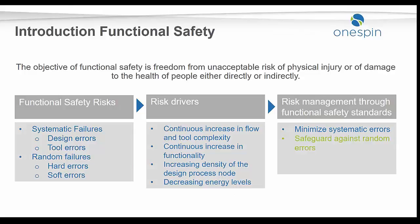The safety risks really come from either systematic failures or random failures. Systematic failures are basically the ones we introduce in the design cycle or into a design. The nature of systematic failures is that they are present in all devices. Then we have random failures, which occur in single devices like hard or soft errors — for example, a latch inside an IC.